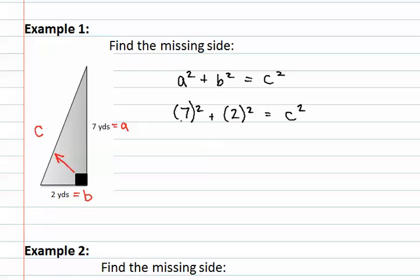We then need to find the values. Seven squared is forty-nine. We add to this two squared which is four, and finally that equals C squared. When we add forty-nine and four, we get fifty-three equals C squared.